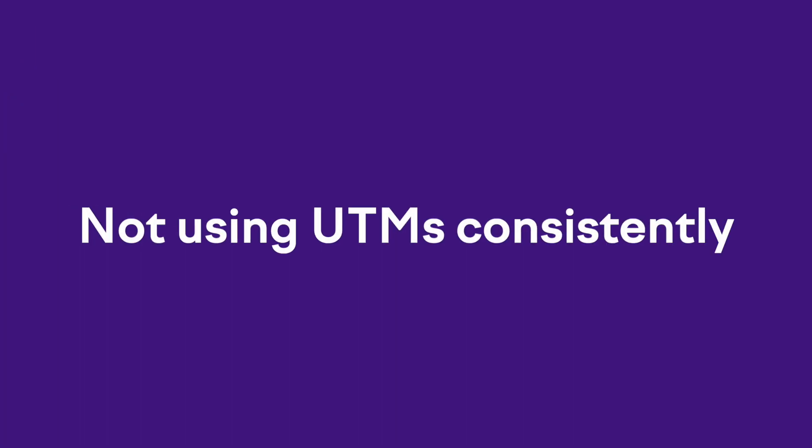And finally, number three: not using UTMs consistently. To get a complete picture of your campaign performance, it's essential to use UTMs consistently across all your links. For example, if we're promoting the SEMrush Academy GA4 course on Instagram and LinkedIn, I would make sure that each link includes the appropriate UTM parameters so that we can track the performance of each platform accurately. Avoiding these common mistakes will help ensure that your UTM tracking is accurate and provides valuable insights for optimizing your marketing efforts.